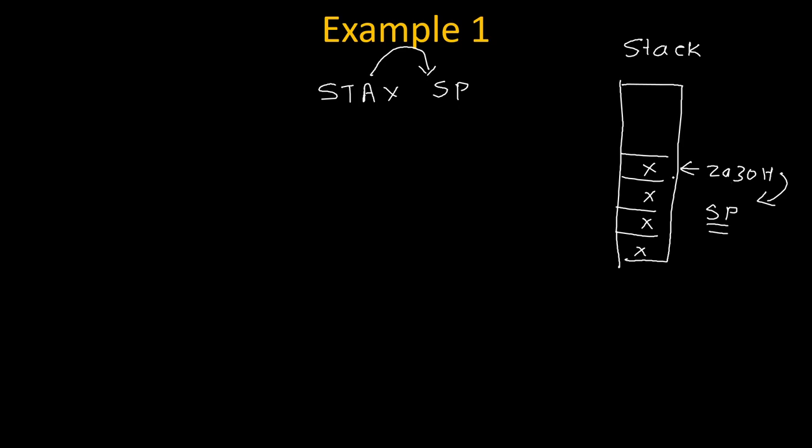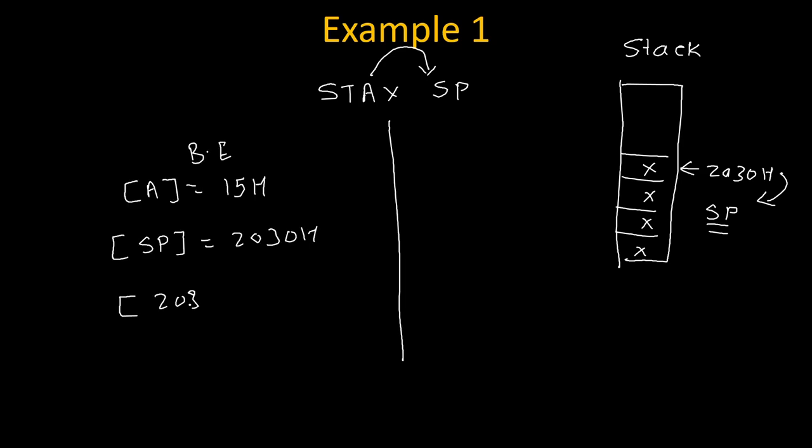Before execution of this instruction, we check: the value of the accumulator is 15h, the value of the stack pointer is 2030h, and on memory location 2030h, data is 77h. Because of this instruction, the accumulator value will get copied to the content of content of the stack pointer. Content of stack pointer is 2030h and content of 2030h is 77h, so 77h will be replaced and the content of 2030h will become 15h. The content of the accumulator remains unchanged at 15h, and the stack pointer also remains unchanged at 2030h.